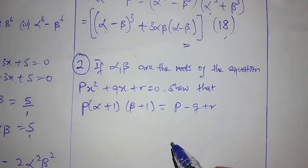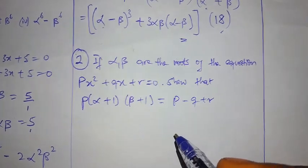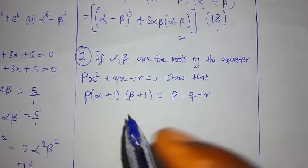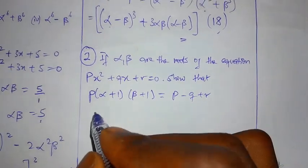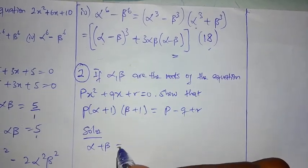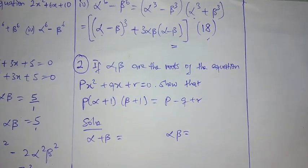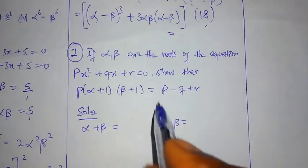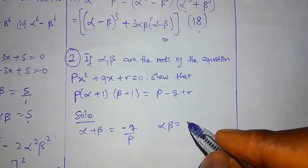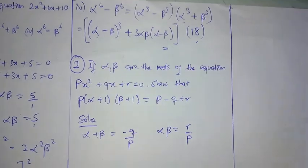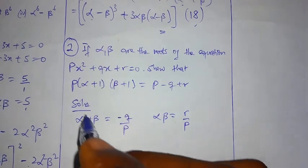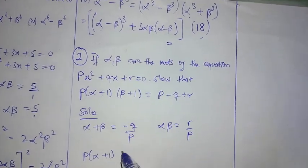Question two says: if alpha and beta are roots of px² + qx + r = 0, show that p(α+1)(β+1) equals p minus q plus r. In this case I'm proving from left to right. First I get alpha plus beta equals minus q over p and alpha·beta equals r over p.